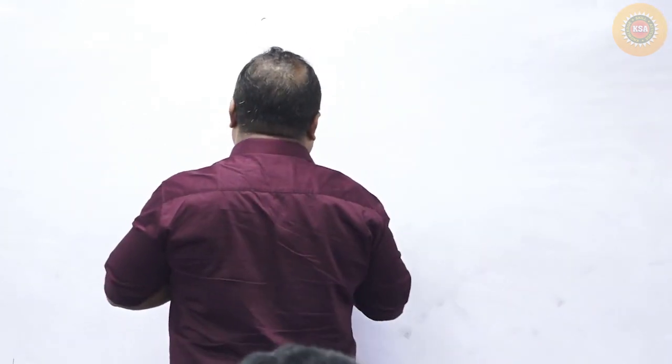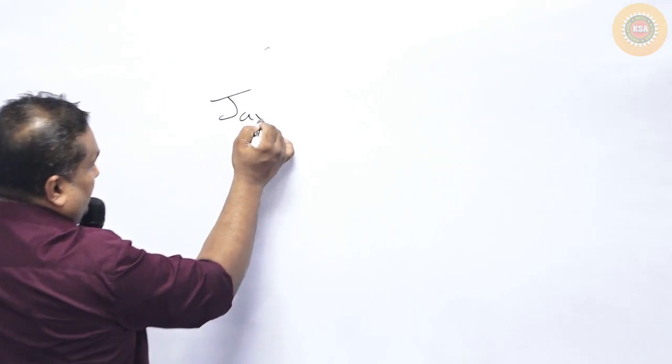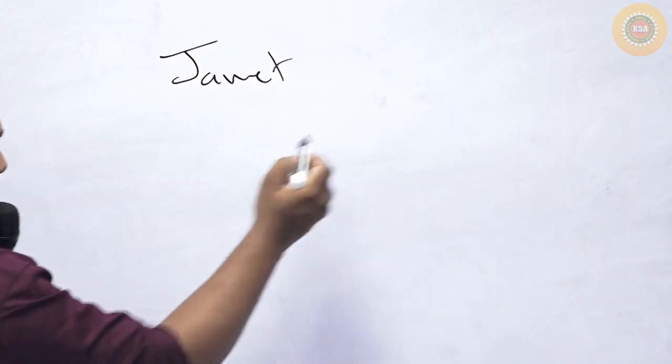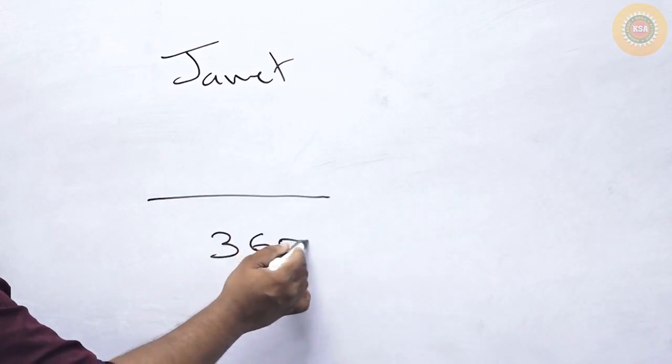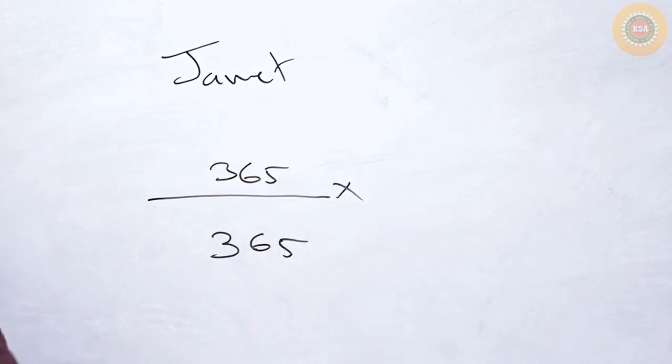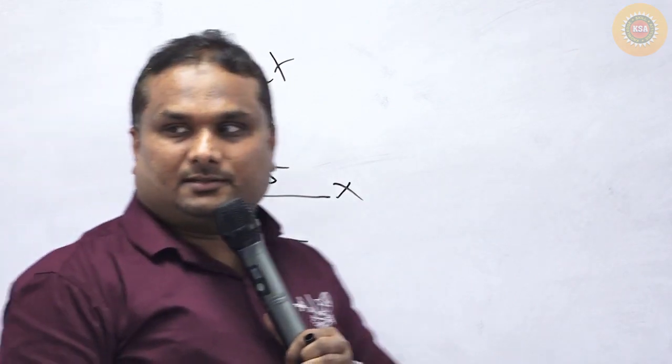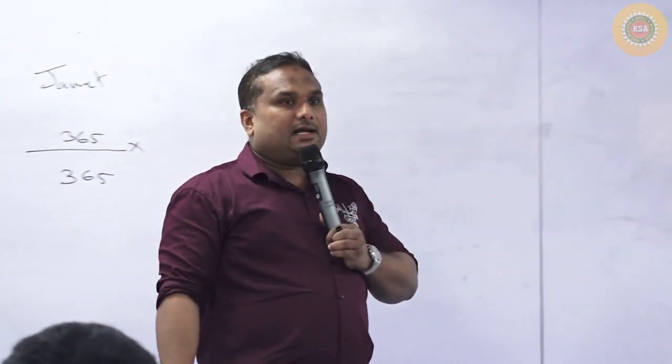Are you ready? Let's suppose in a classroom there are four persons. The first person's name is Janet. Janet's birthday could be any of the 365 out of 365 days — it is possible. Let's suppose Janet was born on April 20th.